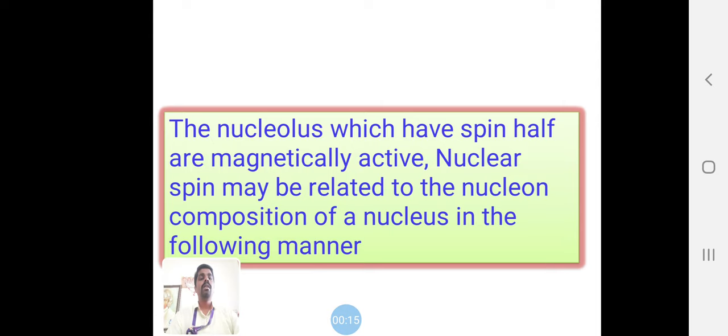Nuclear magnetic resonance is based on the nucleus, which has spin and is magnetically active. The nuclear spin may be related to the nucleon composition of a nucleus in the following manner. Here, the nucleus is the main area we're working with.